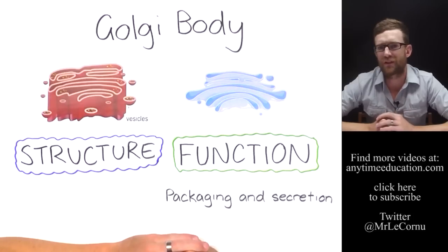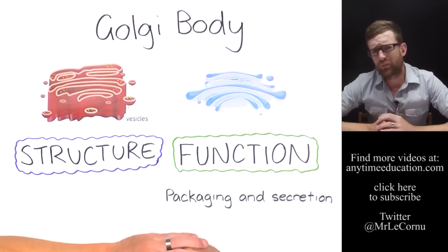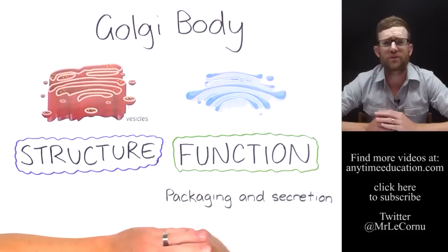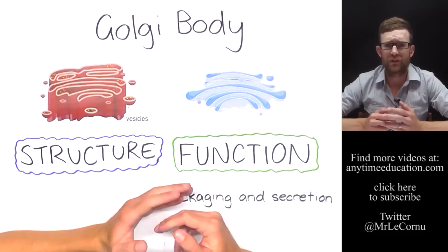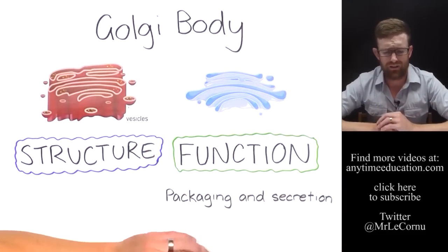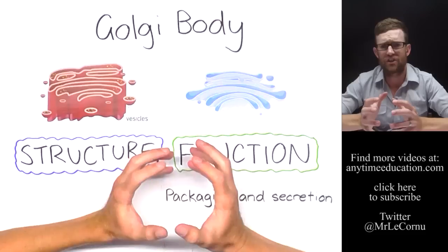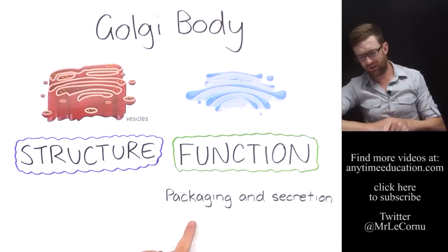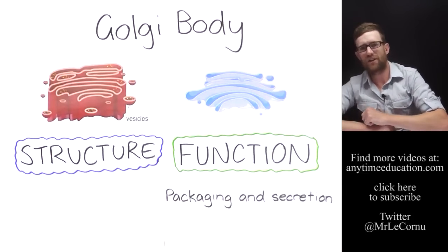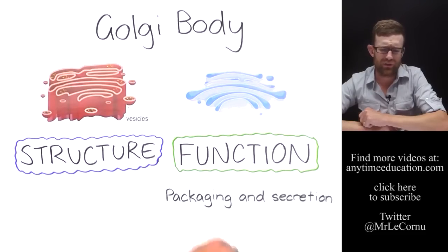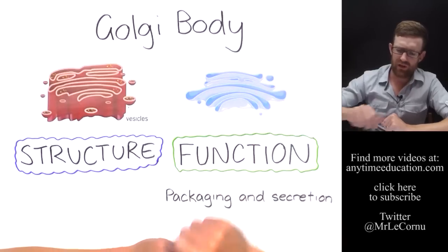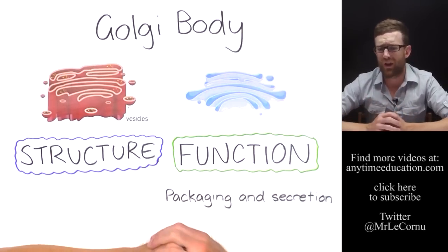To help remember the function of the Golgi body, think of it as like the post office of the cell — things get packaged up and sent away. Of course when you describe it, say it's involved in packaging and secretion. I also get students to remember the structure because it looks a bit like a Wi-Fi symbol, which might help you recognize a Golgi body when you see one.